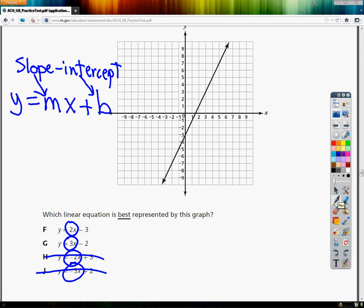So what happens if I just took my hand and covered up this 2x and then I covered up this 3x? All I would be left with is y is equal to negative 3 for F and for G, y is equal to negative 2.